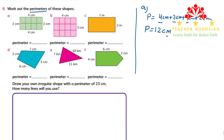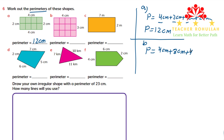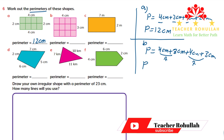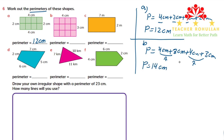The unit for perimeter is centimeters because it is a unit of length. So the perimeter for shape A is 12 centimeters. Shape B is also a rectangle, having a length of four centimeters but a width of three centimeters. The perimeter for shape B equals four centimeters plus three centimeters plus four centimeters plus three centimeters. Four plus three is seven, and seven plus seven is 14 centimeters. So the perimeter of shape B is 14 centimeters.